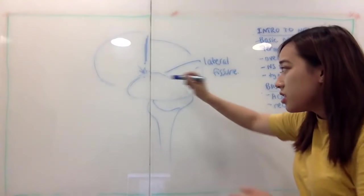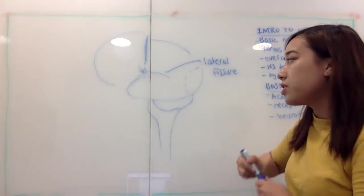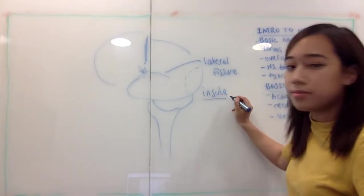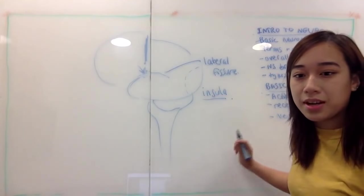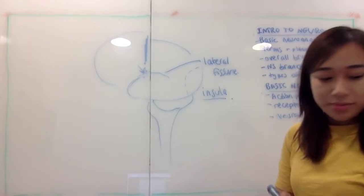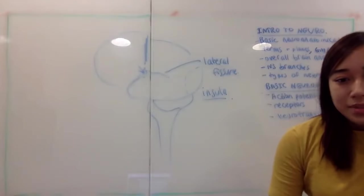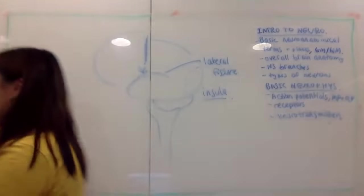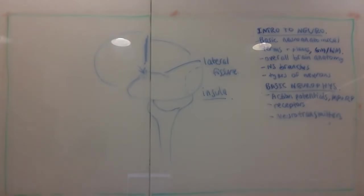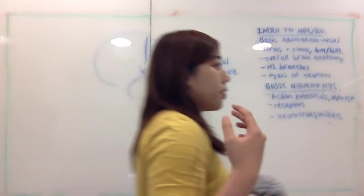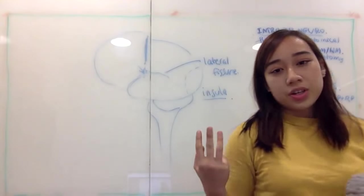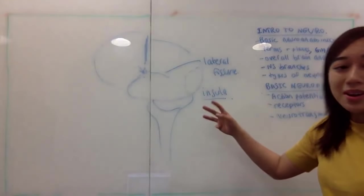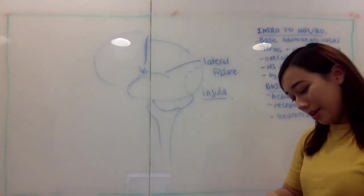The insula is not an ancient part of cortex, but you have three short gyri and two long gyri inside it. If you take apart the brain, you can see it's literally inside the sylvian fissure, also known as the lateral fissure. Its function isn't entirely clear, but it's important to know.